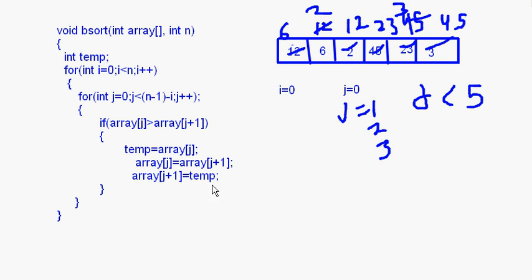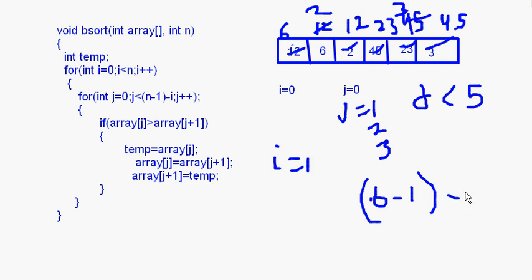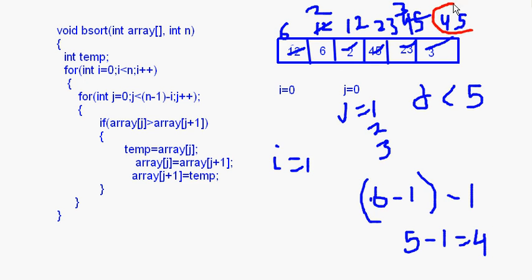After the first pass, i becomes equal to 1. Now the inner loop is: for int j = 0; j < n - 1 - i. n - 1 is still 6 - 1 = 5, but i is now 1, so 5 - 1 = 4. So now j < 4, meaning indices 0, 1, 2, 3. Since 45 is already at the end as the heaviest element, there is no need to check it again.